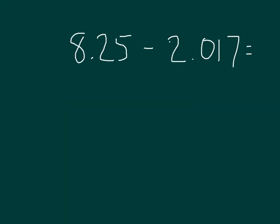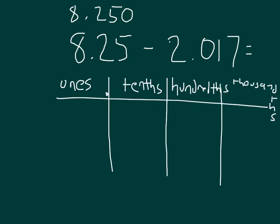Here I have another problem of 8 and 25 hundredths minus 2 and 17 thousandths. A question that's often asked is what is the smallest place value? In this case the smallest place value is in the thousandths place. Using a traditional algorithm, I would rewrite 8.25 as 8.250 or 8 and 250 thousandths. Let's set up a place value chart with ones, tenths, hundredths, and thousandths.